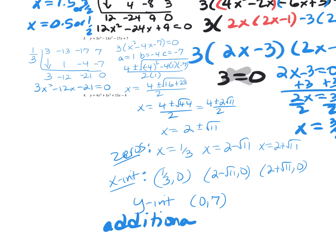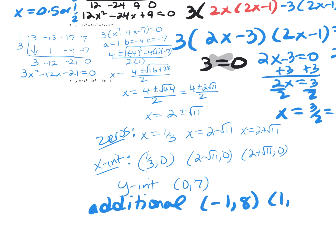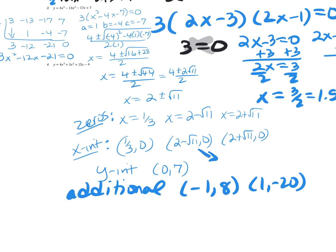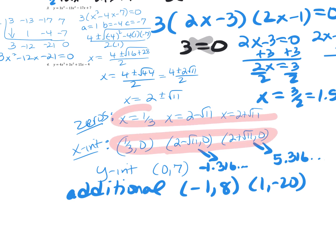Additional points in between the zeros: negative one comma eight would be a good one, and one comma negative twenty would be another good additional point. When you looked at your calculator, these two x-intercepts were crazy long decimals — for example, 2 minus root 11 was about negative 1.316, and 2 plus root 11 was about 5.316. When you list this on the quiz, you need to list the intercepts and zeros in radical form. Do not give the decimal form — you will get it wrong.